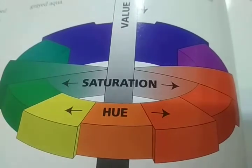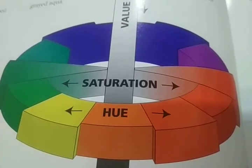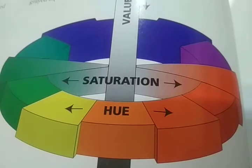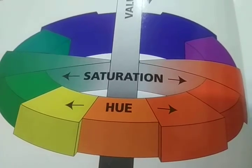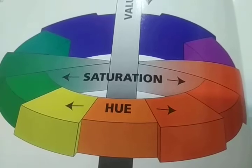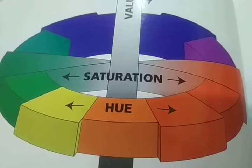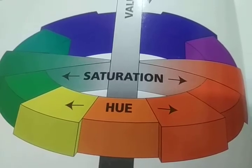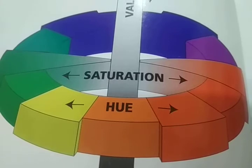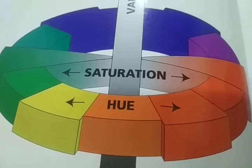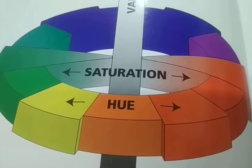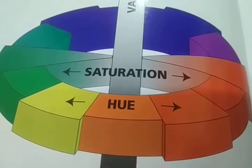What is saturation? The intensity of a color is described as its saturation or chroma. Saturation refers to how much gray a color contains. At maximum saturation, colors appear clear, pure, brilliant, bright, rich, and bold. Less saturated colors are described as soft, muted, subtle, misty, or dusty.